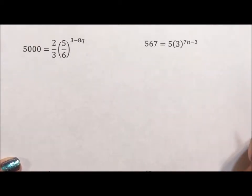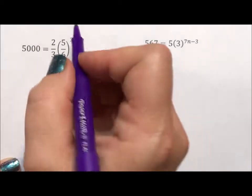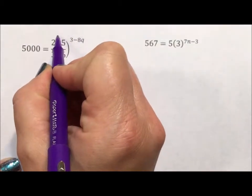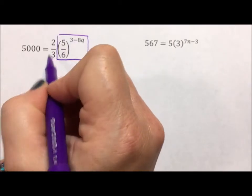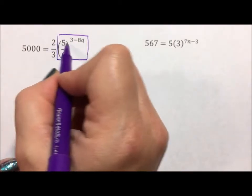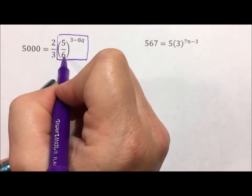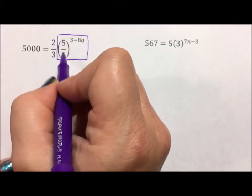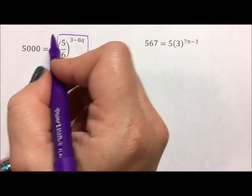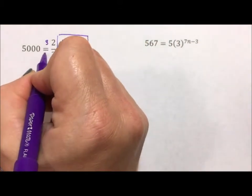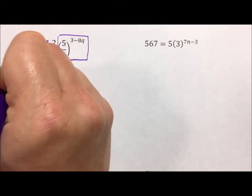All right, so for this first one, the exponent is only attached to the 5/6 part of this. It's not attached to the 2/3. So multiplying this to get 10/18 or 5/9 is not appropriate. What is appropriate is flipping and multiplying.